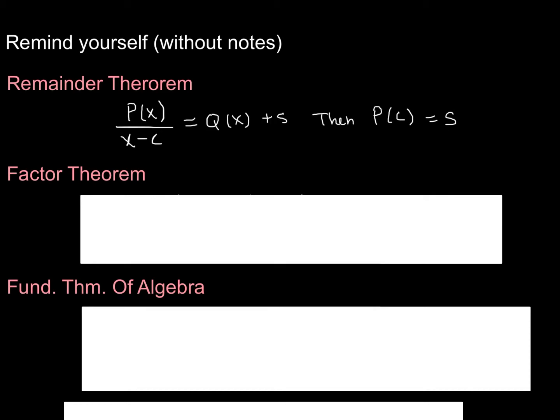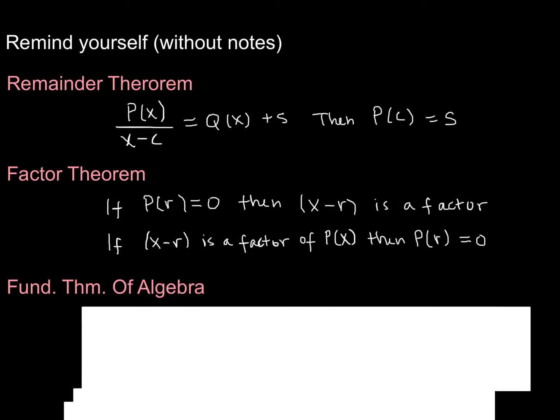Alright. Let's get on to the factor theorem. So the factor theorem says this. If P(r) is equal to 0, then x minus r is a factor. Now, this is another way of saying that r is a root, because a root is a value for x that you plug into your function and get 0. So this is just another way of saying if r is a root, then x minus r is a factor. And we've talked about that a lot,